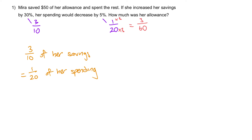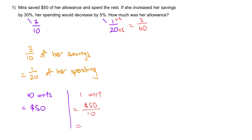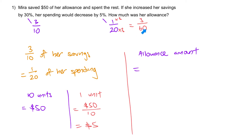We know that at the beginning she has 10 units of savings, which is equal to $50. So, 10 units equals $50. Then 1 unit will be $50 divided by 10, giving us $5. Next, to figure out the allowance amount, which is 70 units — 10 plus 60 — it's $5 times 70 to give us the answer of $350.